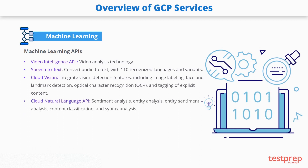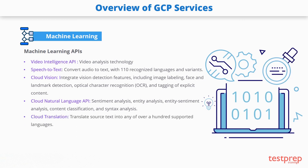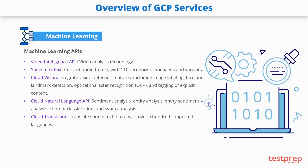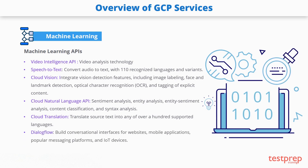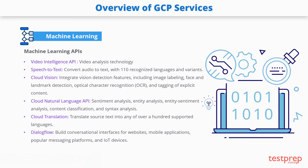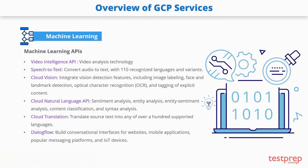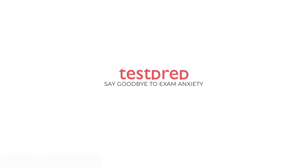The Cloud Natural Language API lets you add sentiment analysis, entity analysis, entity sentiment analysis, content classification, and syntax analysis. Cloud Translation lets you quickly translate source text into any of over a hundred supported languages, with language detection for cases where the source language is not known. Dialogflow lets you build conversational interfaces for websites, mobile applications, popular messaging platforms, and IoT devices — including chatbots capable of natural and rich interactions with humans.